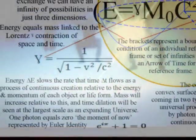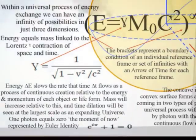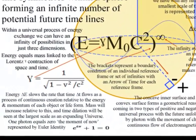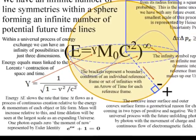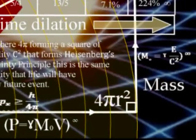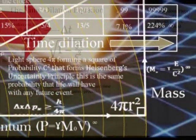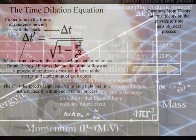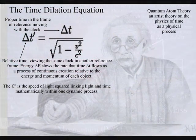Photon energy slows the rate that time flows as a process of continuous creation, relative to the energy and momentum of each object or life form. Mass will increase relative to this, with the time dilation of Einstein's relativity being part of this universal process.